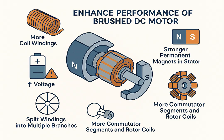To increase motor torque and smoothness, engineers use more coil windings on the rotor, employ stronger permanent magnets, increase the supply voltage (watch out for overheating), split windings into multiple loops to maintain torque, and add additional commutator segments for continuous switching.